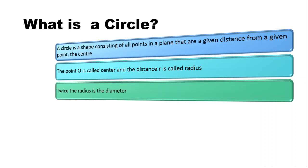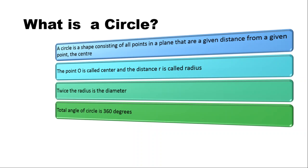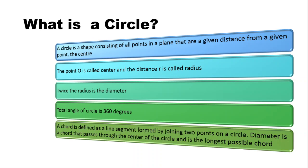The diameter is twice the radius of the circle, and the total angle in a circle is 360 degrees. A chord is defined as a line segment formed by joining two points on a circle. The diameter is a chord that passes through the center of the circle.